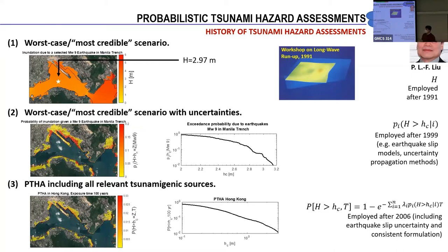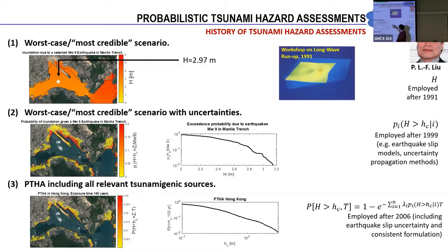If you have an earthquake of magnitude 9, that event will differ from the next magnitude 9 earthquake. The characteristics will be different, and because of that, the response of the tsunami is uncertain — it's uncertain due to the uncertainties of the earthquake characteristics. Around the 2000s, people started to work with new methods in which instead of showing a certain maximum tsunami height value, we came up with distributions: for a given tsunami height, what is the probability to exceed that value?